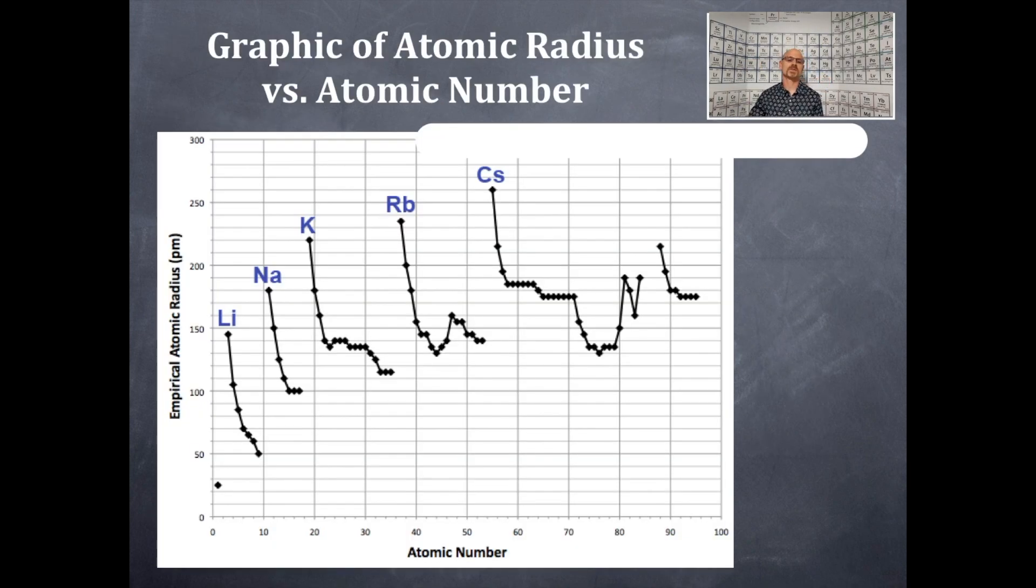Today we're going to be doing a graphic of atomic radius versus atomic number. You can see that the atomic radius is in picometers on the y-axis, and the atomic number is just increasing by one along the x-axis.